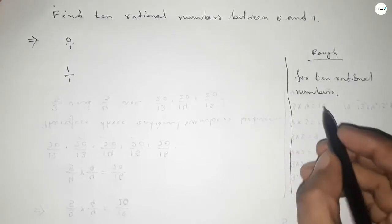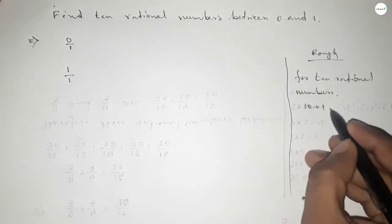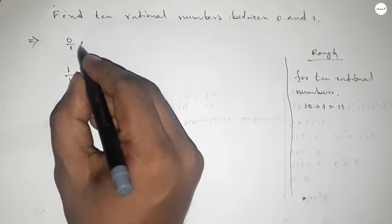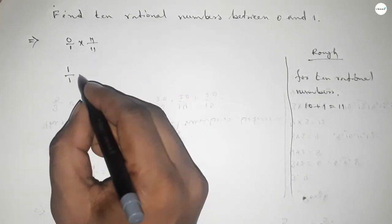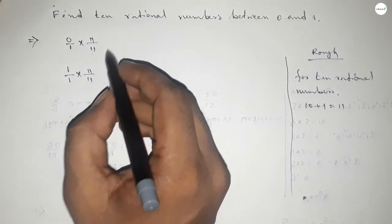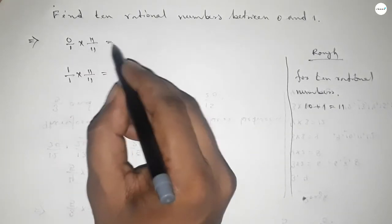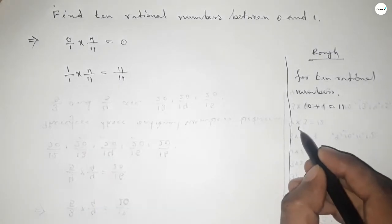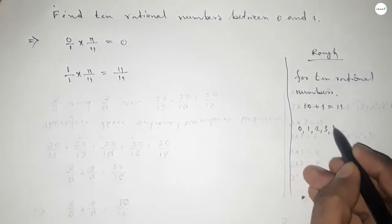We should multiply by 10 plus 1 equal to 11 with both numbers, up and down, by this way. Okay, so this is 0 over 11 and this is 11 over 11. Now between 0 to 11 we can find 10 natural numbers.